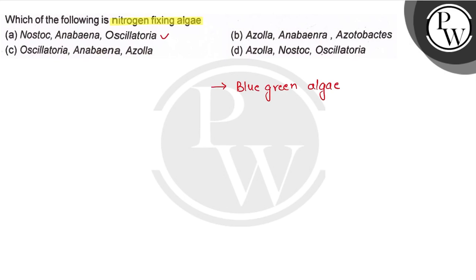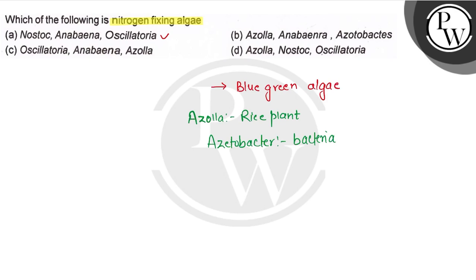The other option includes Azola. If I talk about Azola, this is the name of the rice plant. If I talk about Azitobacter, Azitobacter is a bacteria — it is free-living and aerobic bacteria which also fixes nitrogen.